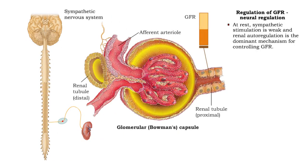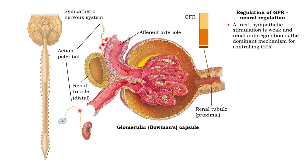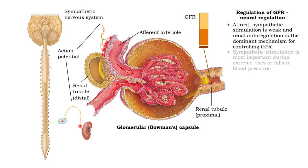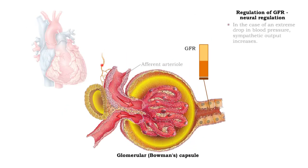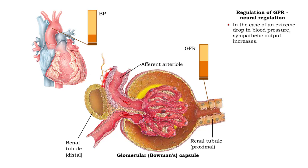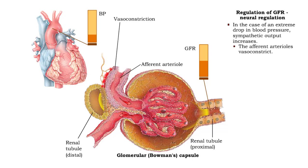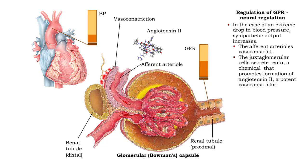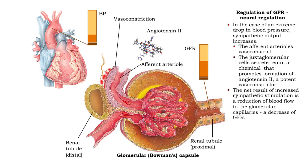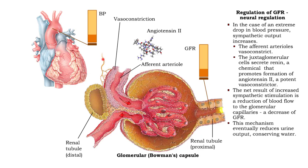At rest, sympathetic stimulation is weak, and renal autoregulation is the dominant mechanism for controlling glomerular filtration rate. Sympathetic stimulation is most important during extreme rises or falls in blood pressure. In the case of an extreme drop in blood pressure, as occurs during hemorrhage, sympathetic output increases, having two effects: the afferent arterioles vasoconstrict, and the juxtaglomerular cells secrete renin, a chemical that promotes formation of angiotensin 2, a potent vasoconstrictor. The net result is a reduction of blood flow to the glomerular capillaries and a decrease in glomerular filtration rate, which eventually reduces urine output, conserving water.